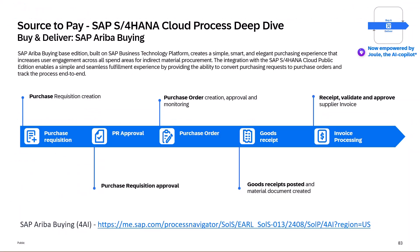So as a recap, we saw the purchase requisition being created in SAP Ariba buying. We saw the purchase requisition being approved automatically. Then the purchase order being created directly in S4HANA and being sent to the supplier via EDI. Then we carried out the goods receipt in the standard way within S4HANA — this was reflected back in the SAP Ariba buying solution. And then we finalized by carrying out the invoice, which was again reflected back in the process flow and status flow of the SAP Ariba buying solution. Thank you for your time.